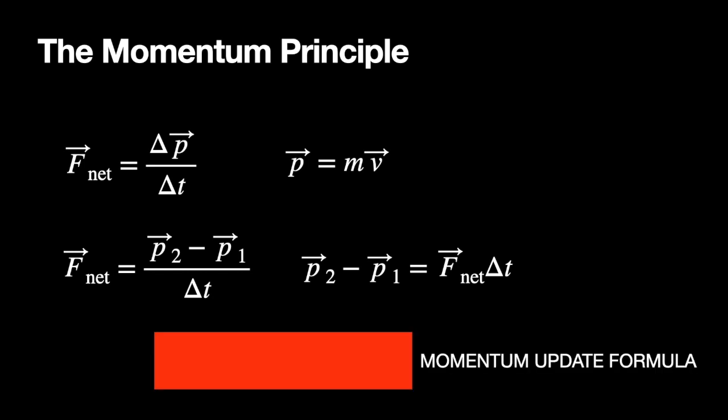We call this the momentum update formula: p2 equals the momentum at the beginning of the time interval plus F_net times delta t.